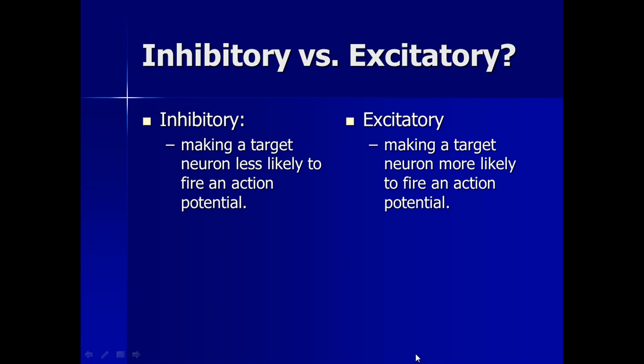If they are inhibitory, they make a target neuron less likely to fire an action potential — in other words, they prevent another action potential from occurring. If they are excitatory, they make a target neuron more likely to fire an action potential — in other words, excitatory neurotransmitters cause another action potential to be generated.